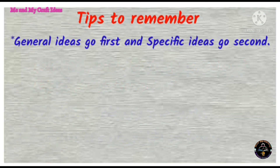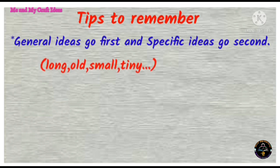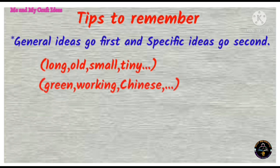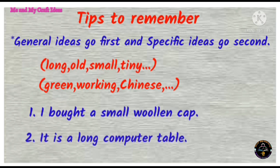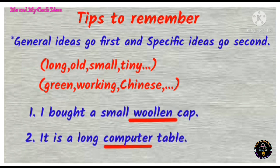Next tip: general ideas go first, specific ideas go second. Long, old, small, tiny — these are general ideas. Green, working, Chinese — these are specific ideas. For example: I bought a small woolen cap. It is a long computer table. In these sentences, small and long are general ideas, while woolen and computer are specific ideas.